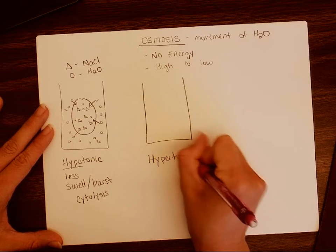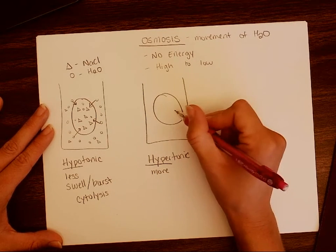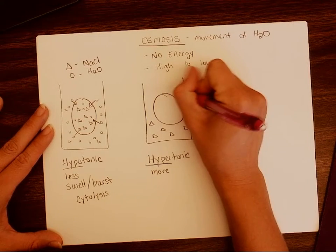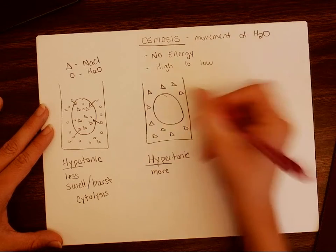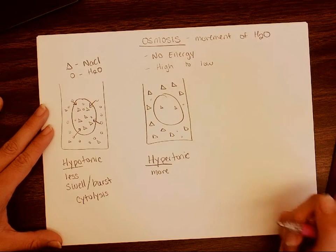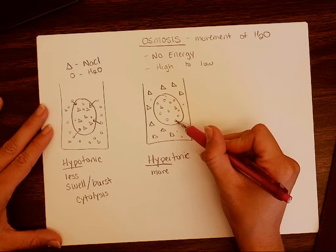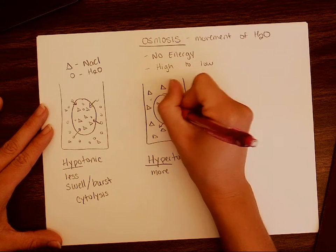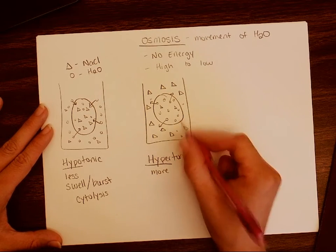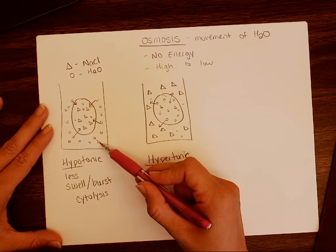The opposite of this is hypertonic. Hyper means more than, so we're going to see more solute outside the cell than inside. There is a lot of salt outside — lots of triangles — and only a little bit of salt inside. Opposite of that, there is very little water outside the cell but a lot of water inside. So flowing from a high concentration inside the cell, water wants to flow out, which causes the cell to shrink.